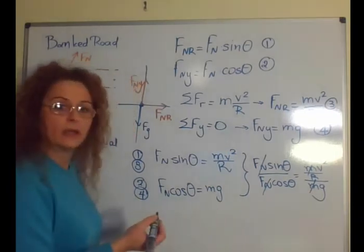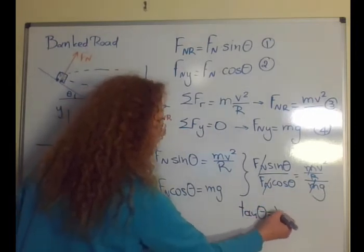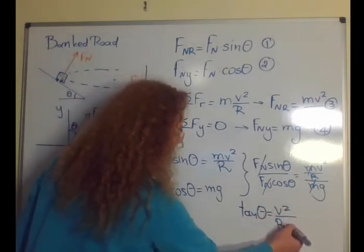So the tangent of theta will be v squared over rg.